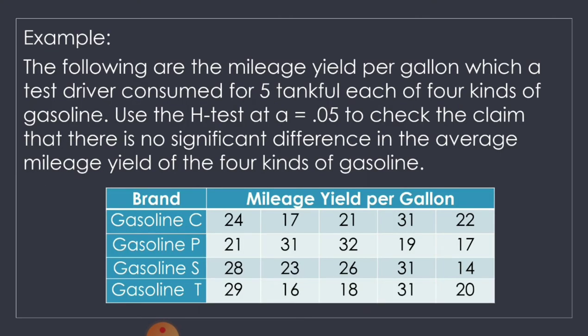For example, the following are the mileage yield per gallon which a test driver consumed for 5 tankfuls each of 4 kinds of gasoline. Use the H-Test at alpha equal to 0.05 to check the claim that there is no significant difference in the average mileage yield of the 4 kinds of gasoline. We have a table showing the mileage yield per gallon of the 4 brands of gasoline.